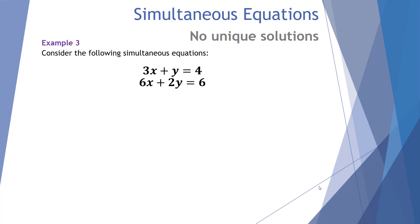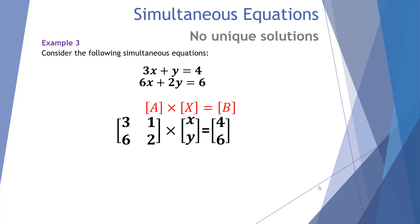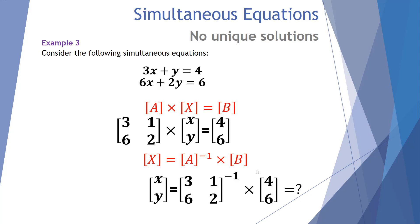Example number three. Let's consider the simultaneous equations 3X plus Y equals 4 and 6X plus 2Y equals 6. We can set this up using our traditional matrix approach: coefficient matrix A is [3, 1, 6, 2], unknown matrix X, and end result matrix B is [4, 6]. We try to find the solution by multiplying the inverse of A by B. Let's have a look at this on the TI-Inspire CAS calculator.